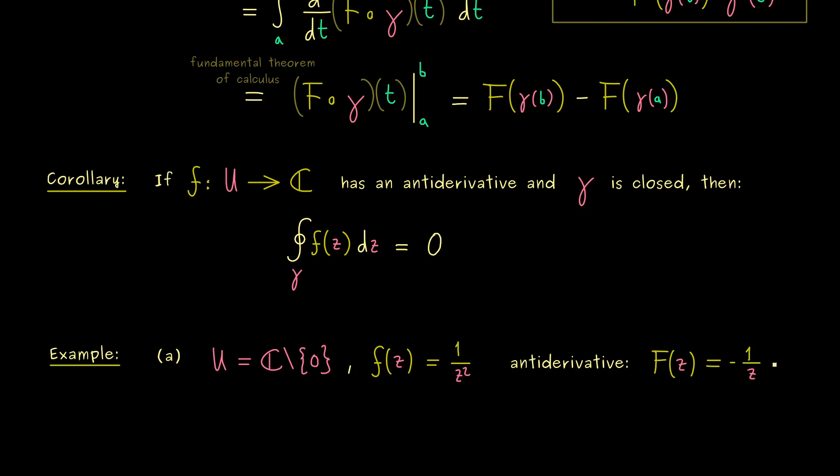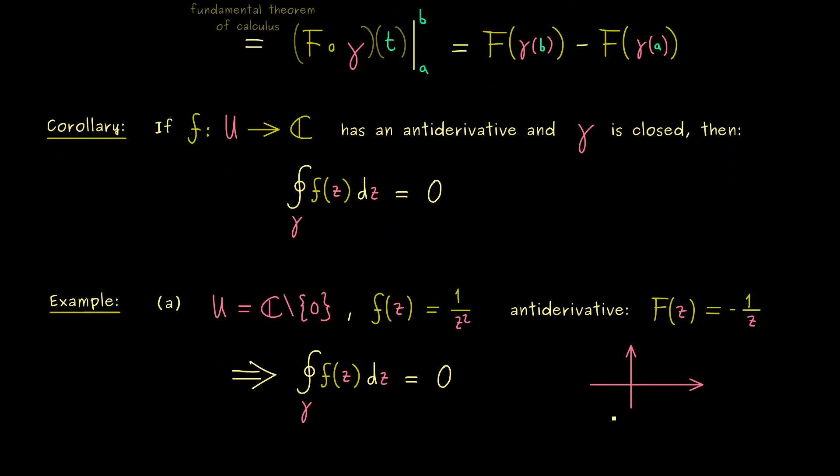Because the complex derivative of this one is exactly 1 over z squared. And now we can conclude with the corollary above that the complex integral is always zero when the curve gamma is closed. For example this fact also holds when we go around the origin. So we don't have to calculate the integral at all, because we already know we get out zero, because we have an anti-derivative.